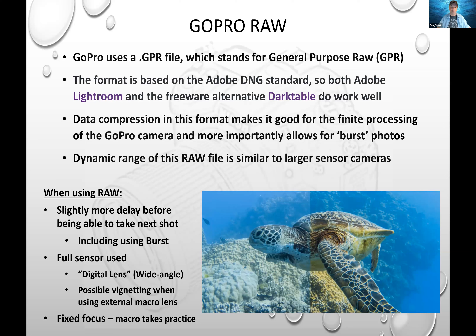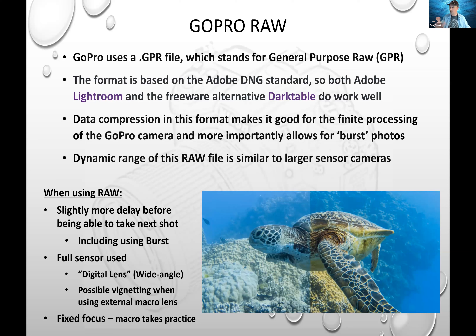Most people hate digital zoom because you reduce the resolution of the image, or you use a process called pixel interpolation to keep the same resolution, which can add artificial grain. Using the full wide angle means you can run into vignetting — the dark areas around the edges of your image — and this is most apparent when you're using external macro lenses with the GoPro.